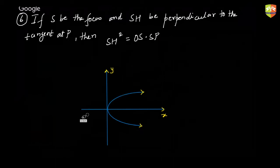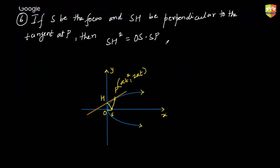It's pretty simple. P is at (at², 2at) and the tangent will be ty = x + at². Let's find the coordinates of H — where it meets the y-axis, x will be 0.